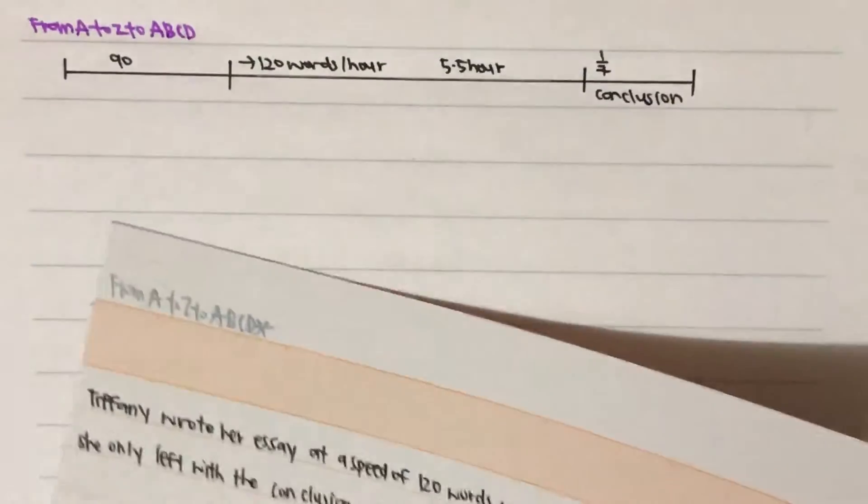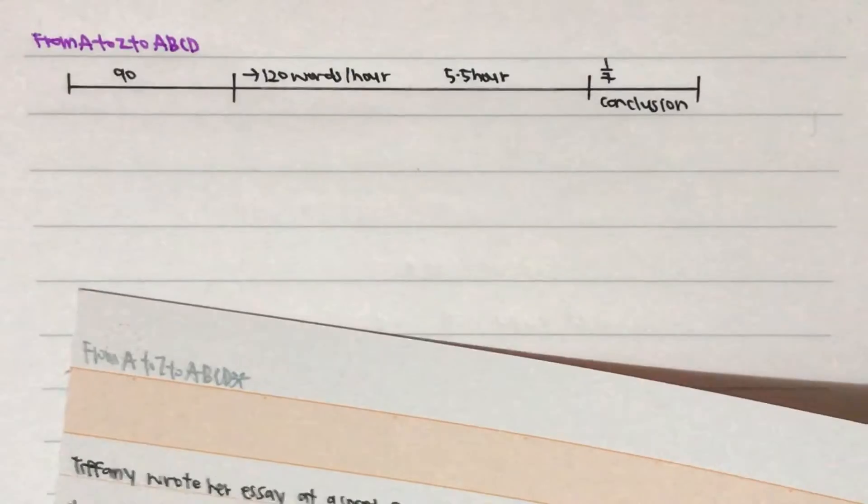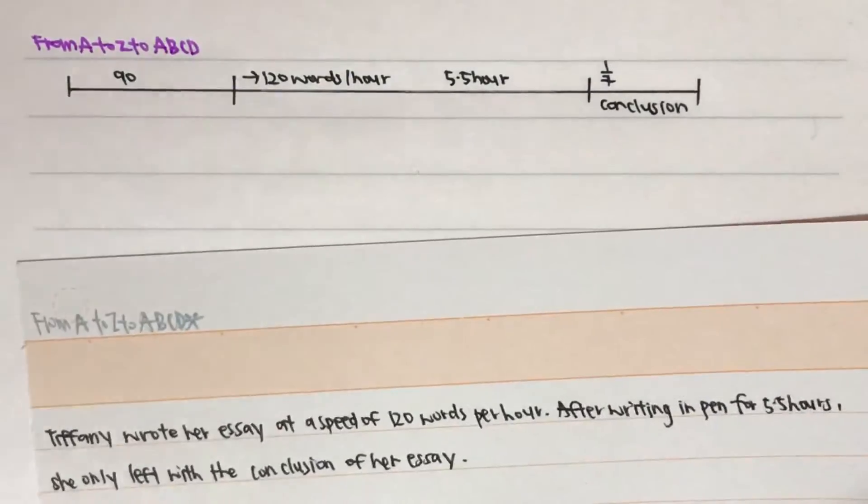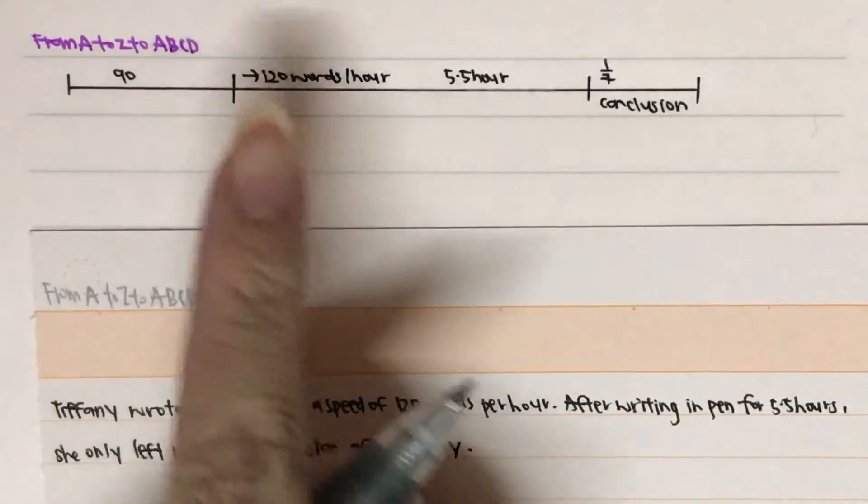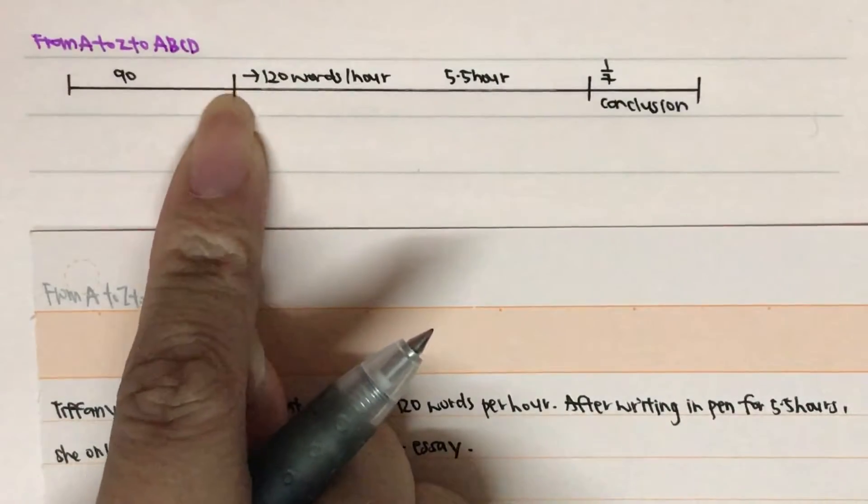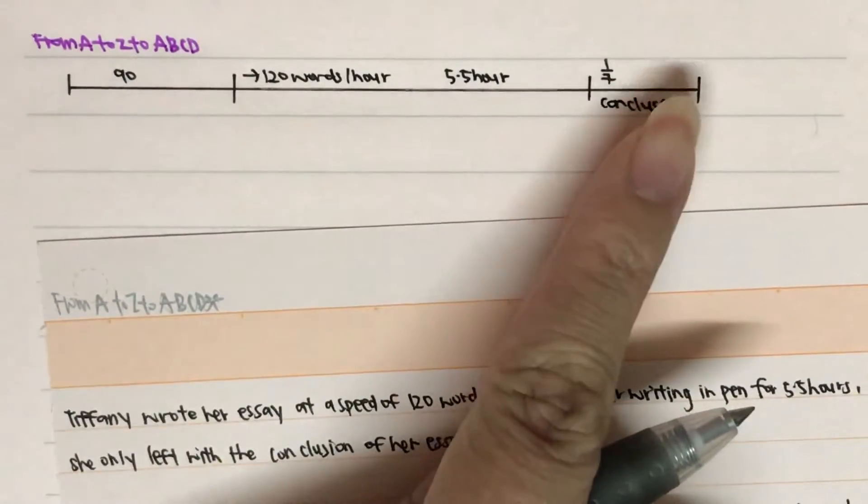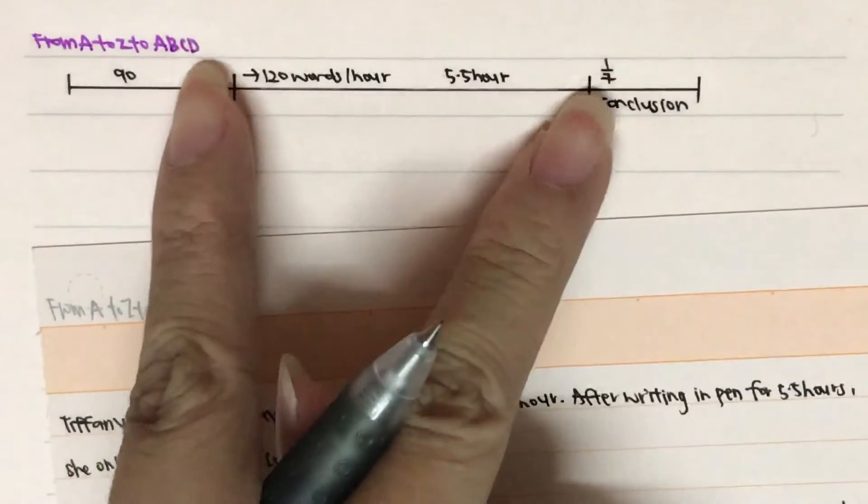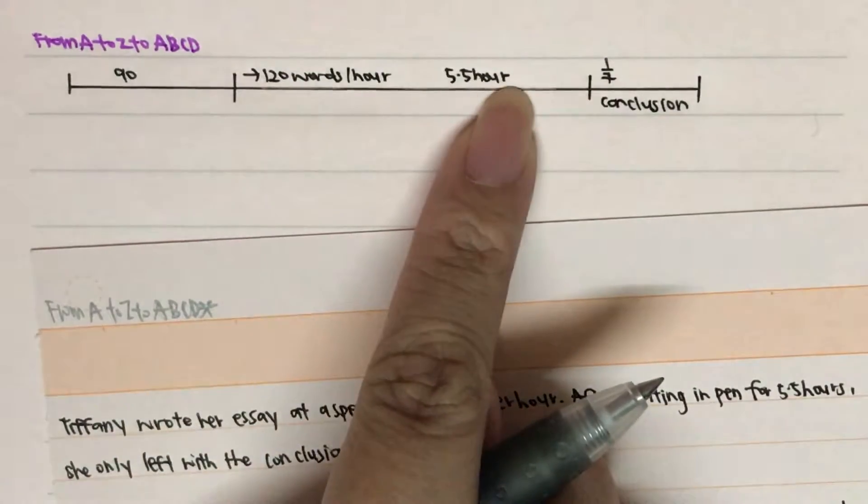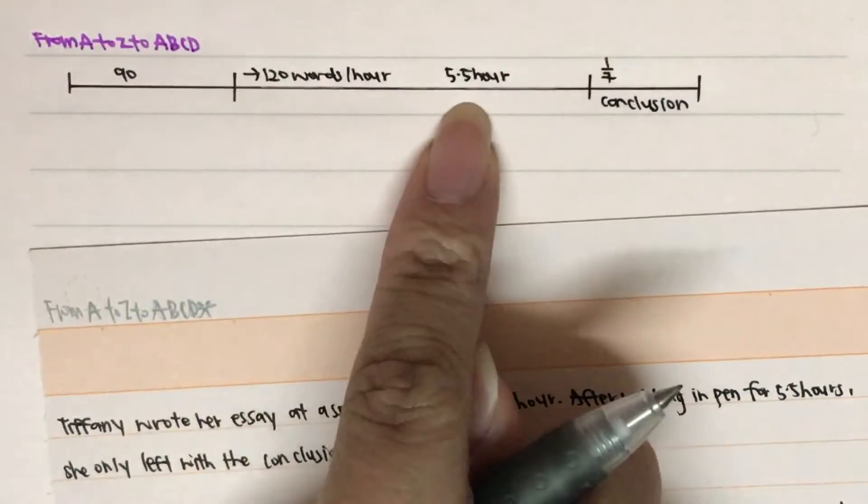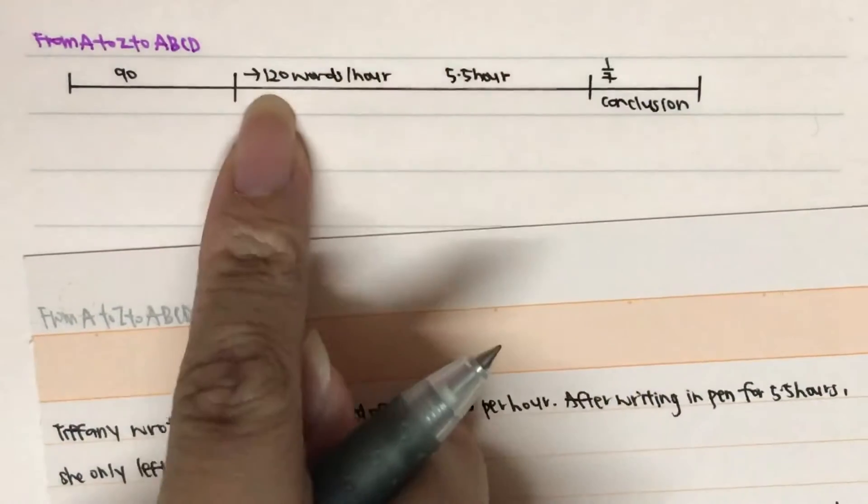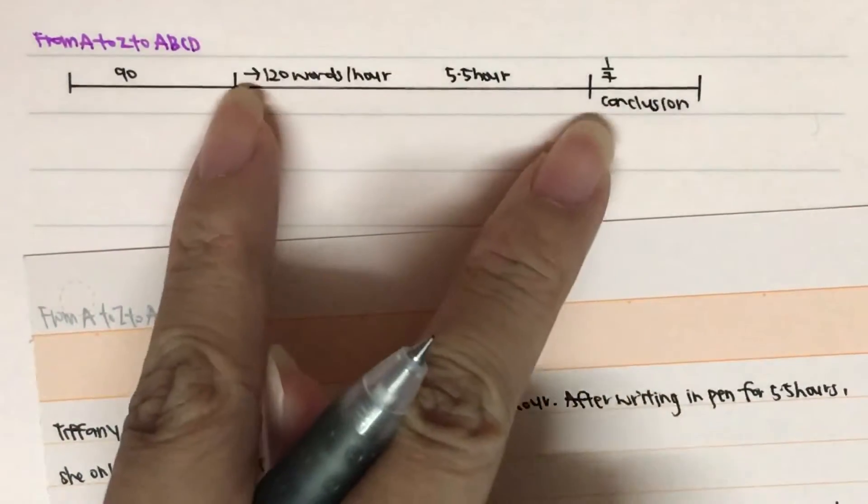Similarly to the previous episode, we are going to draw the model. So this is our model. The preface is 90 words. Then this is official introduction and everything. Then the conclusion. And conclusion is 1/7th. So in this place, it actually takes 5.5 hours. And it's 120 words per hour over here.